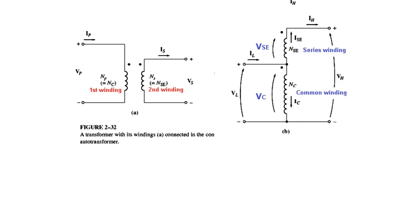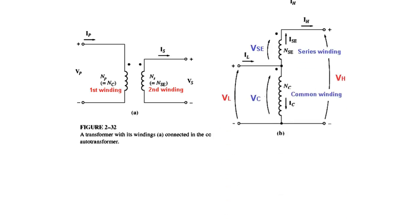The voltage common to both sides is called VC, the lower side voltage is VL, and the voltage across the series winding is VSE. The low voltage is VL, which equals VC. On the high side, VH equals VSE plus VC. So: VL = VC and VH = VC + VSE.